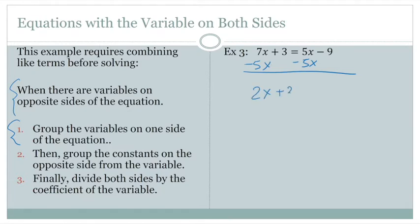We bring down the plus 3. We bring down the equal sign. The 5x's cancel each other out. And don't forget to bring the sign over with your constant, so that's a negative 9 that comes down.